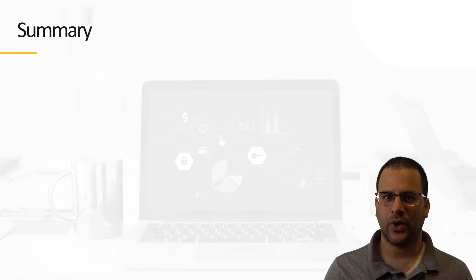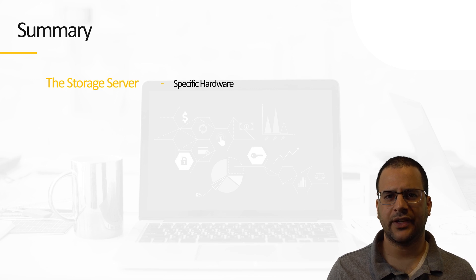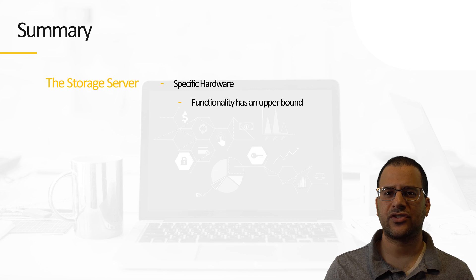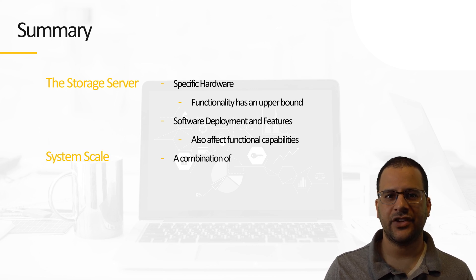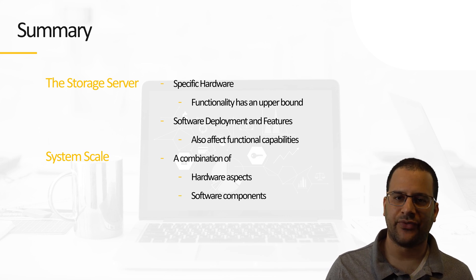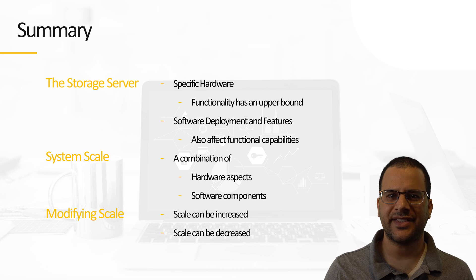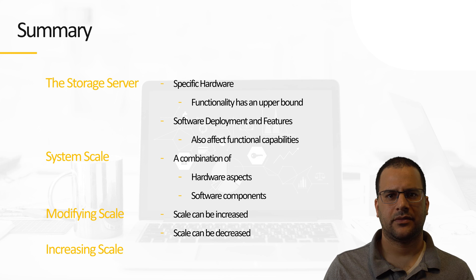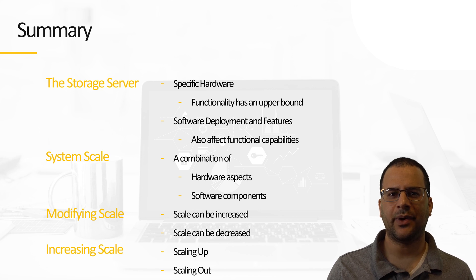To summarize this episode: we began with considering an existing storage server with well-known hardware and understood that physical hardware can limit our functional capabilities. We then understood that software features affect the functional capabilities of our system as well. Hence, we determined that the scale of a system is a combination of both hardware aspects and software components and features being provided. We started exploring the idea of modifying a system's scale — scale can be increased but also decreased. We examined two common manners to increase it: the vertical scaling approach (scaling up) and the horizontal scaling approach (scaling out). In the domain of distributed software systems, scaling out is mostly preferred as it is limited by software architecture and not by physical hardware limitations.